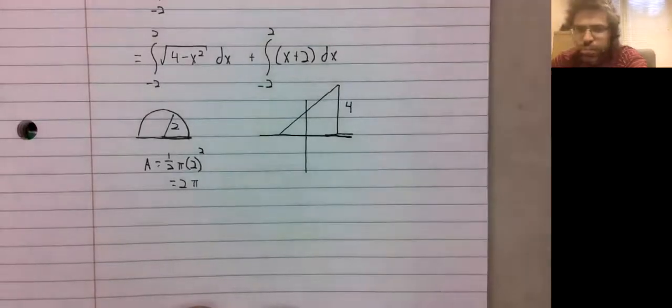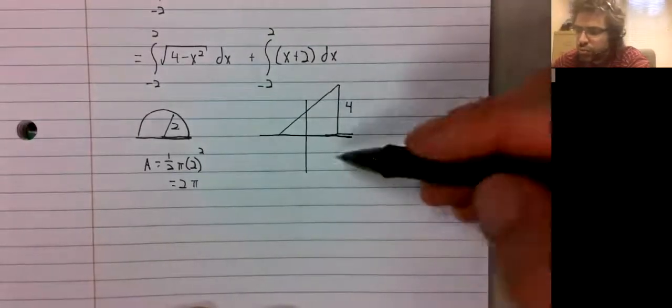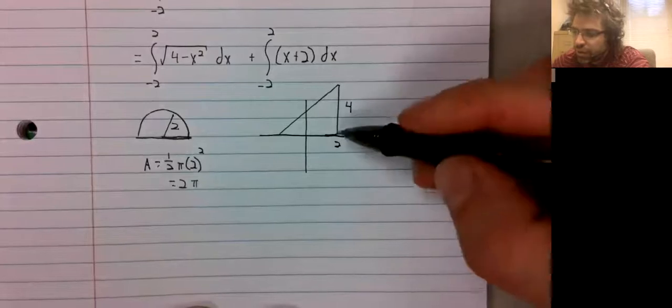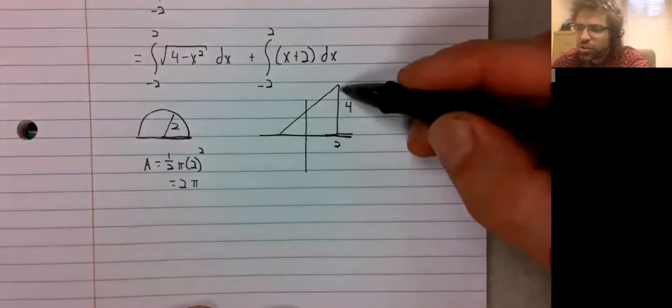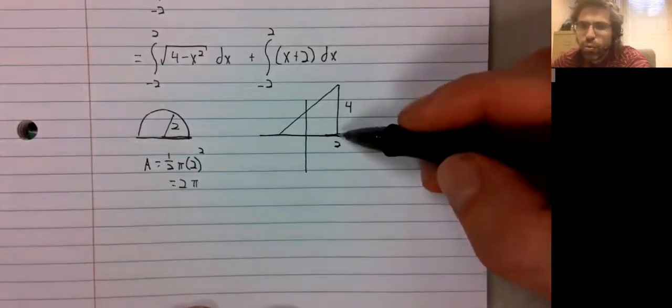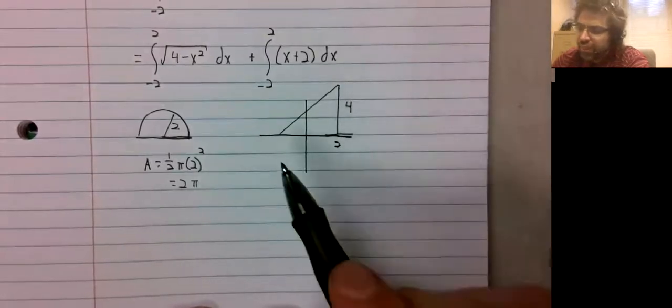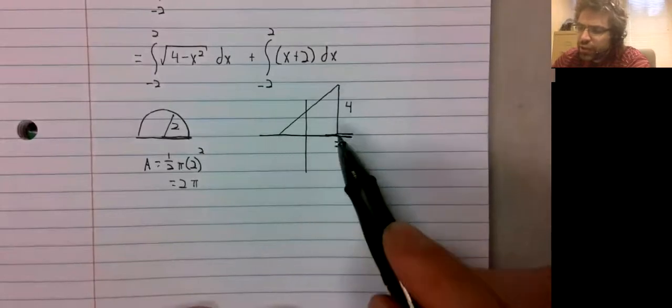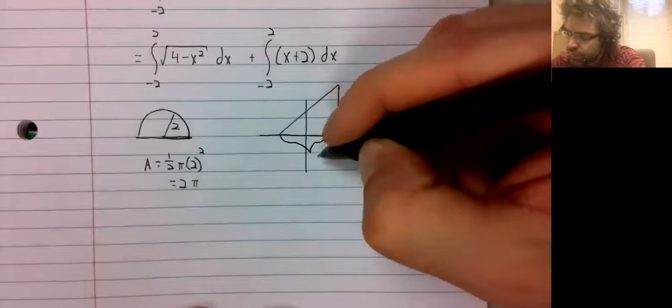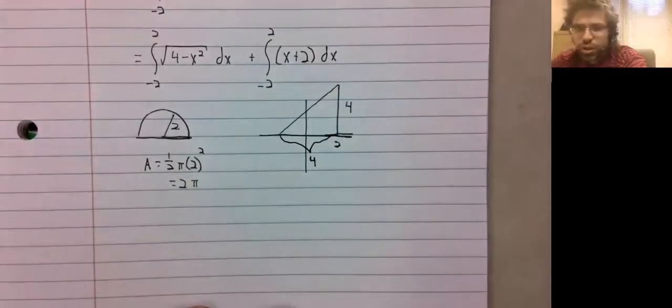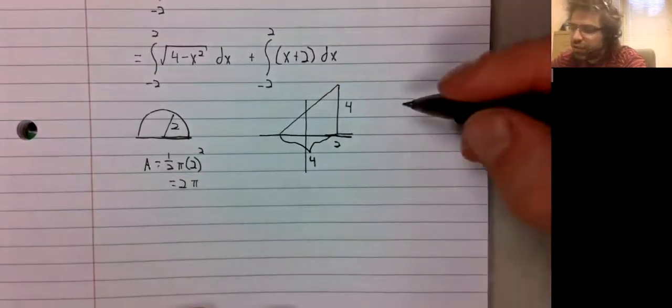At positive 2, this y distance is 2 plus 2, or 4. We're going from negative 2 to positive 2. So the base is 4.